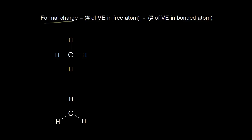To assign formal charge, you take the number of valence electrons in the free atom, or the number of valence electrons the atom is supposed to have, and from that you subtract the number of valence electrons in the bonded atom, or the number of valence electrons the atom actually has in the drawing.